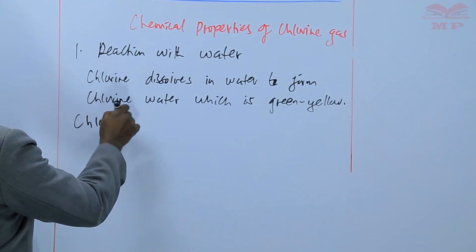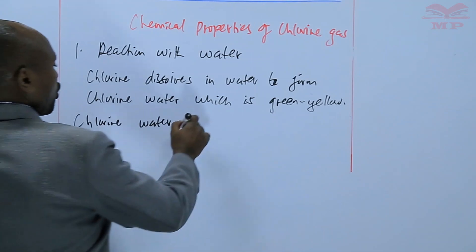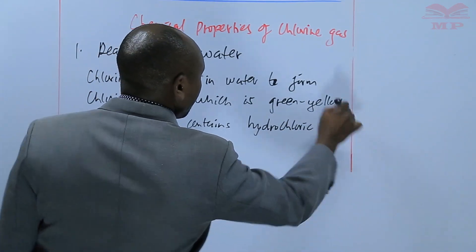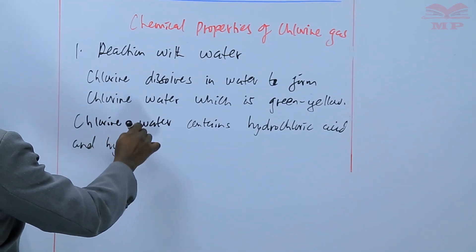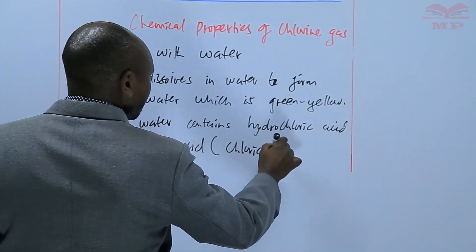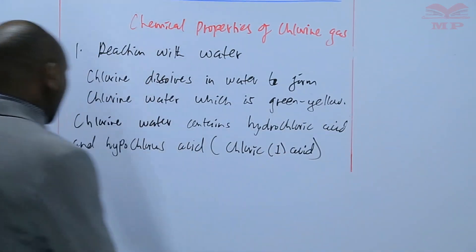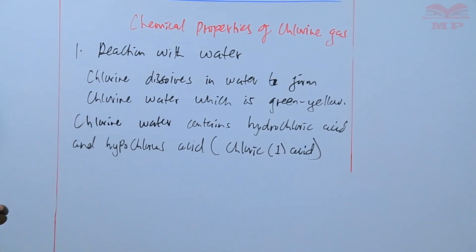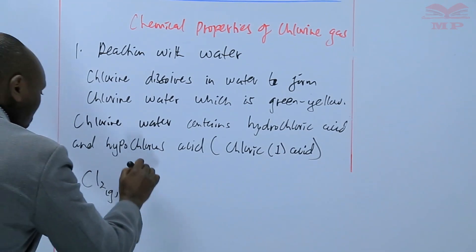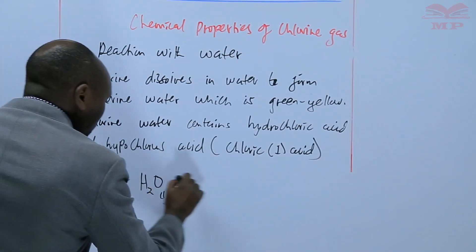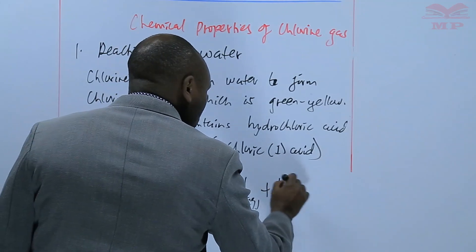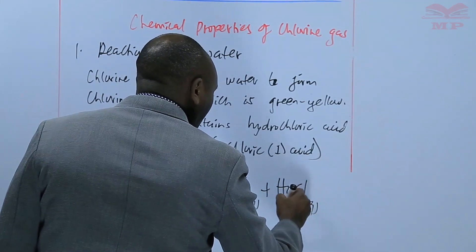Chlorine water contains hydrochloric acid and hypochlorous acid. Hypochlorous acid is what we are calling chloroquine acid, so we can use either term. When chlorine gas dissolves in water, we form HCl, which is hydrochloric acid, and HOCl, which is hypochlorous acid.